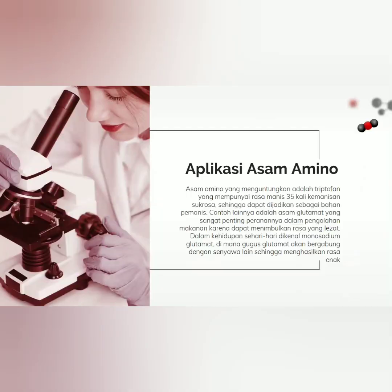Aplikasi asam amino. Asam amino yang menguntungkan adalah triptofan, yaitu yang mempunyai rasa manis 35 kali kemanisan sukrosa, sehingga dapat dijadikan sebagai bahan pemanis. Contoh lainnya adalah asam glutamat yang sangat penting peranannya dalam pengolahan makanan karena dapat menimbulkan rasa yang lezat. Dalam kehidupan sehari-hari dikenal monosodium glutamat, di mana gugus glutamat akan bergabung dengan senyawa lain sehingga menghasilkan rasa enak.